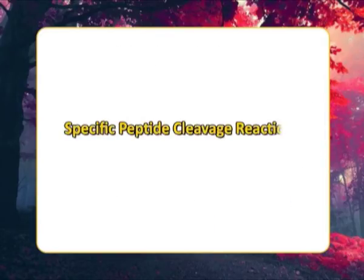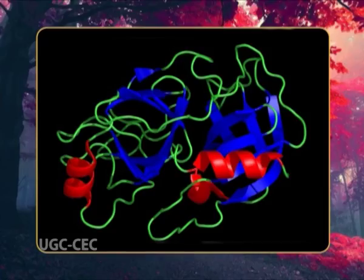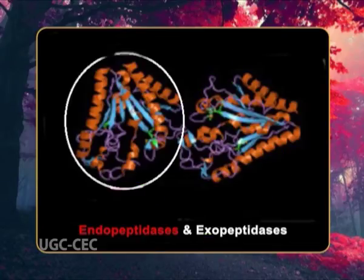Specific peptide cleavage reactions. Polypeptides of greater length must therefore be cleaved either enzymatically or chemically to fragments small enough to be sequenced. Cleavage is specific. Trypsin specifically cleaves peptide bonds after positively charged residues.